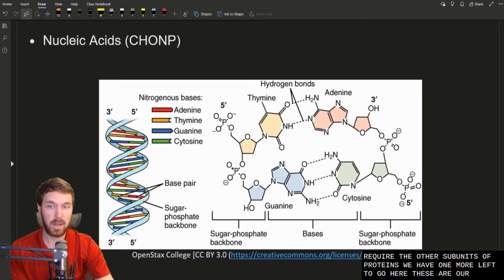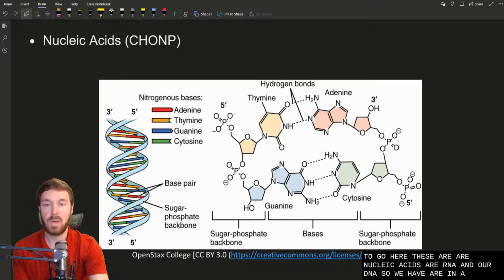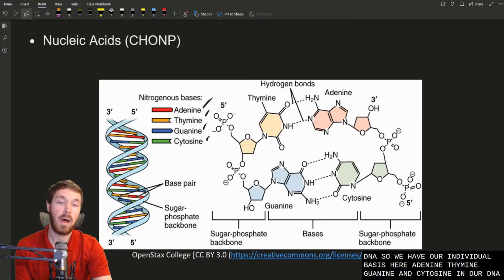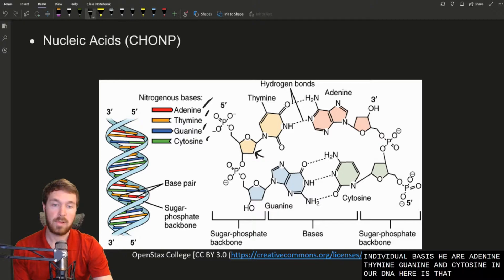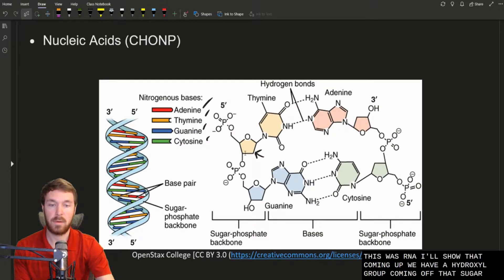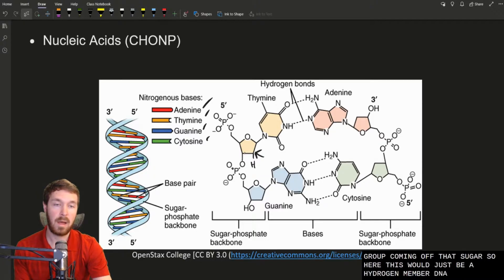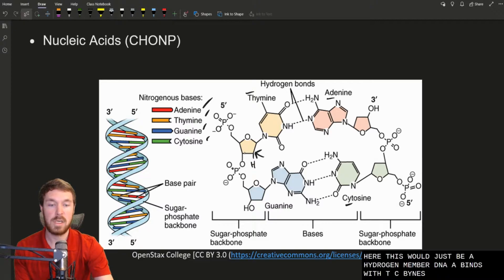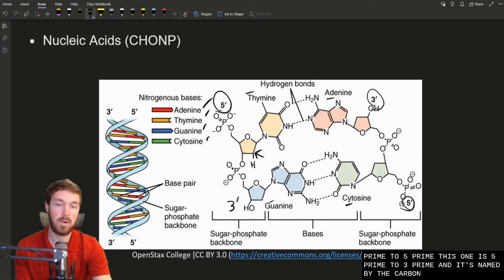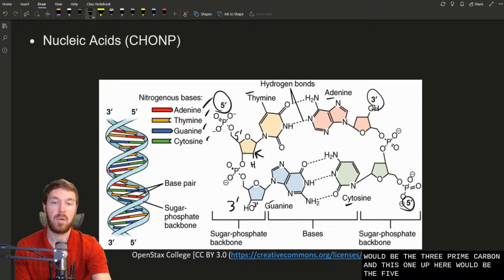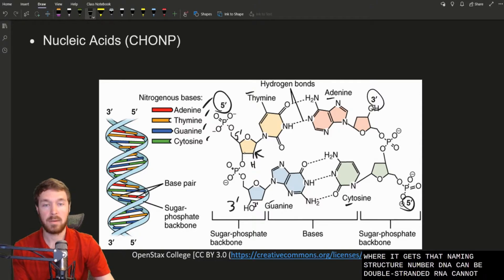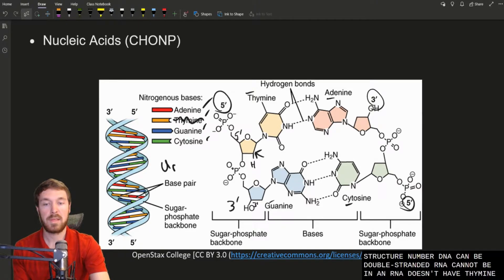We have one more left to go here. These are our nucleic acids, our RNA, and our DNA. So we have our individual bases here, adenine, thymine, guanine, and cytosine in our DNA. Here is that deoxyribose sugar. Remember the only difference here, if this was RNA, we have a hydroxyl group coming off that sugar. So here this would just be a hydrogen. Remember DNA, A binds with T, C binds with G, forming complementary base pairing. And the strands run anti-parallel to each other. So if this is 3 prime to 5 prime, this one is 5 prime to 3 prime. And it's named by the carbon number. So this would be the 3 prime carbon. And this one up here would be the 5 prime carbon. Remember DNA can be double-stranded. And RNA cannot be. And then RNA doesn't have thiamine. We replace thiamine with uracil.